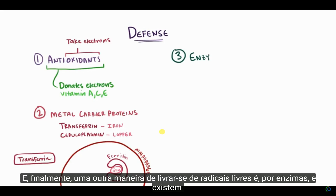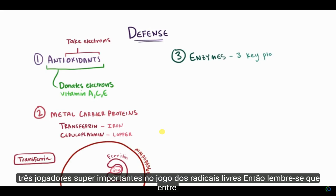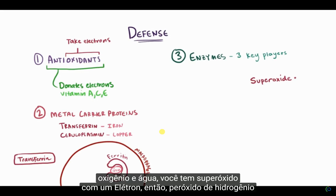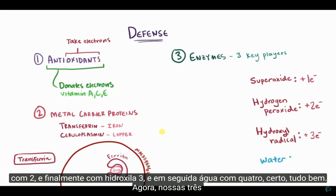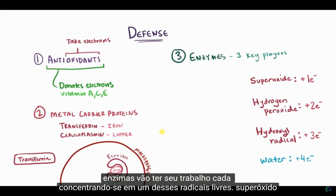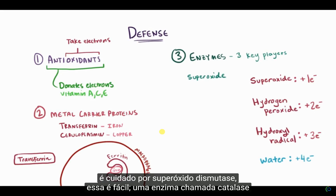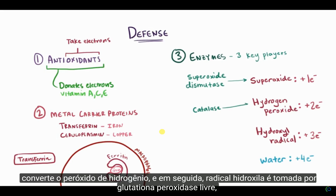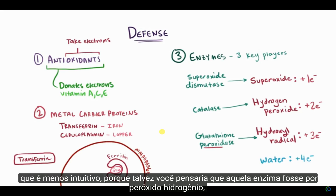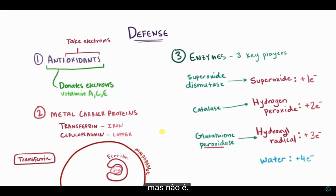Another way we can get rid of free radicals is by enzymes, and there are three super important players. Remember that between oxygen and water, you've got superoxide with one electron, hydrogen peroxide with two, hydroxyl with three, and water with four. Each of these three enzymes focuses on one of these free radicals. Superoxide is taken care of by superoxide dismutase. An enzyme called catalase takes hydrogen peroxide. And the hydroxyl free radical is taken care of by glutathione peroxidase — so remember that glutathione peroxidase is for the hydroxyl free radical.